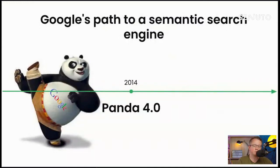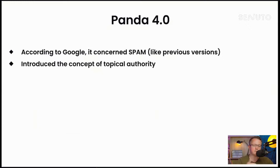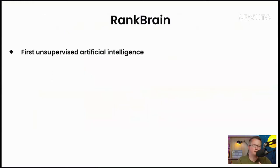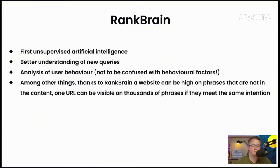The next step was Panda 4.0 in 2014. Unlike previous versions, Panda 4.0 introduced the concept of topical authority — from that day SEOs started using that term. The next step was RankBrain in 2015. RankBrain is Google's first unsupervised artificial intelligence, allowing Google to better understand new queries that had never existed before. It was also the start of analysis of user behavior. Thanks to RankBrain, a website can rank highly for keywords not in its content — one URL can be visible for thousands of keywords if the intention is the same.